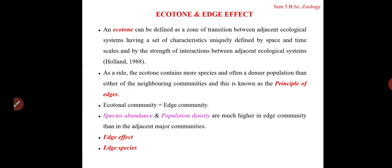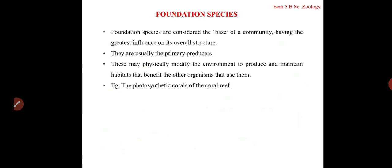The edge effect is the tendency for increased diversity and increased population density in the ecotone. Those species which occur abundantly mainly in the ecotone are referred to as edge species. It is very important that the edge is protected so that both the communities on either side — the adjacent communities of an edge — are preserved.